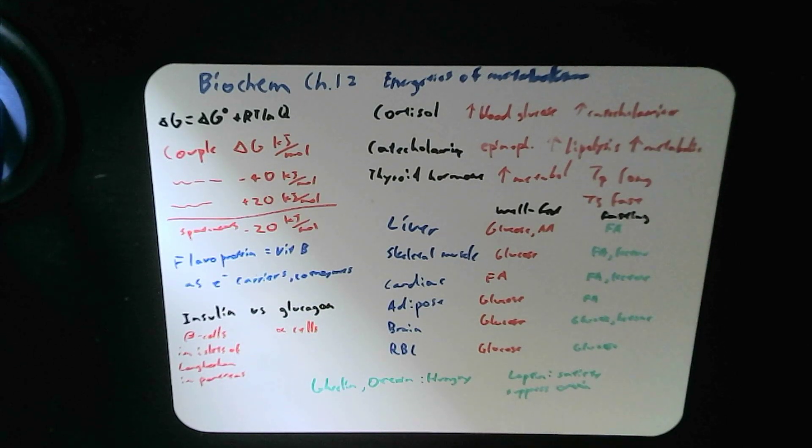The lateral hypothalamus, LH, if you remove it, you will lack hunger. So it is for the hungry state. Lateral hypothalamus for hunger, and your ventral medial hypothalamus, VH, if you remove that, you will become very hungry. So it is meant to suppress eating. Okay, so that's pretty much it. Take care.